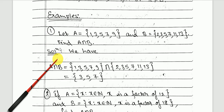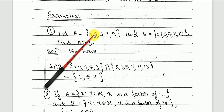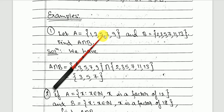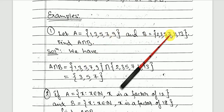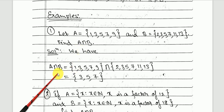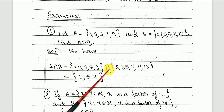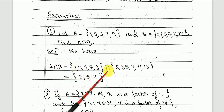Let's try to understand by example. Let A = {1, 3, 5, 7, 9} and B = {2, 3, 5, 7, 11, 13}. Find A intersection B. We write set A, then the intersection symbol, then B, and identify which elements are common in both.